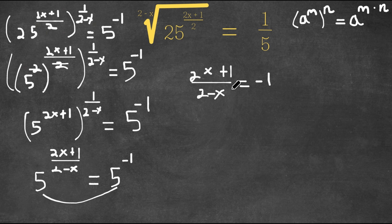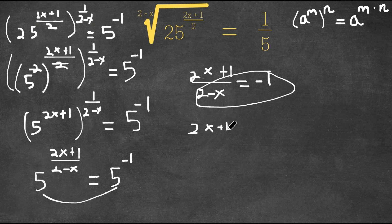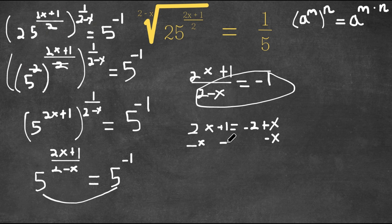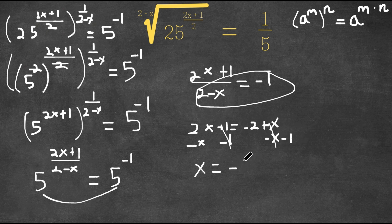Now we have a simple equation. I'm going to multiply both sides by 2 minus x, giving us 2x plus 1 equals negative 2 plus x. Now I'll move the x's to one side and everything else to the other side — subtracting x from both sides and subtracting 1 from both sides. So 2x minus x is x, and negative 2 minus 1 is negative 3. So x equals negative 3.